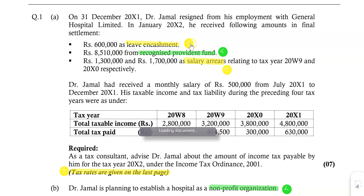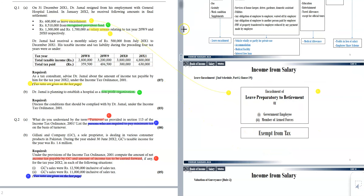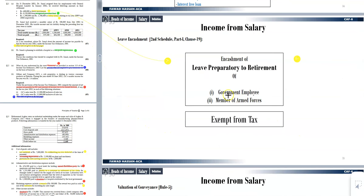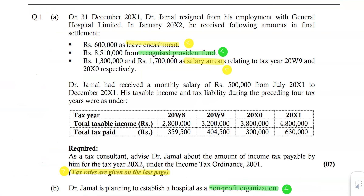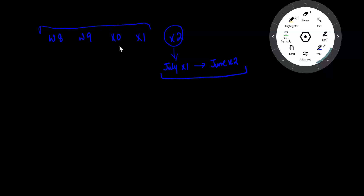Leave encashment — let's see the tax law treatment we discussed in the notes. Leave encashment is exempt from tax only for government employees and members of the armed forces. Since this is not that case, the leave encashment of 600,000 is a taxable amount. So the first amount — leave encashment of 600,000 — will be categorized as taxable.